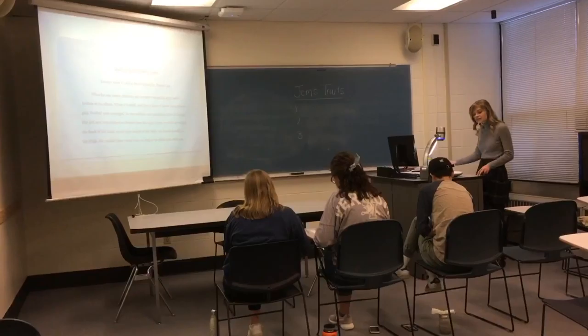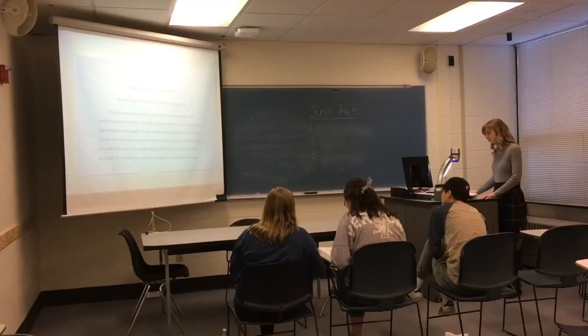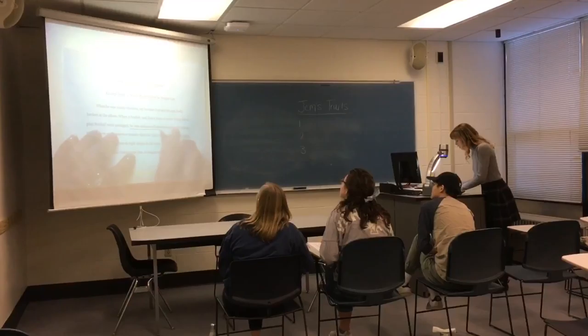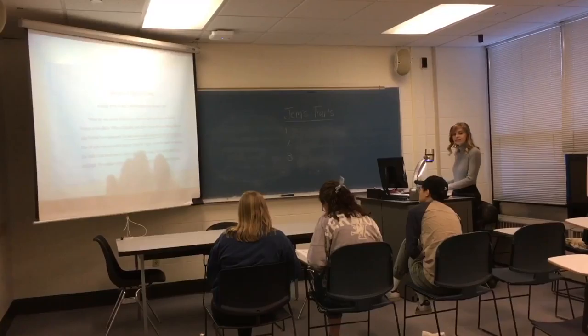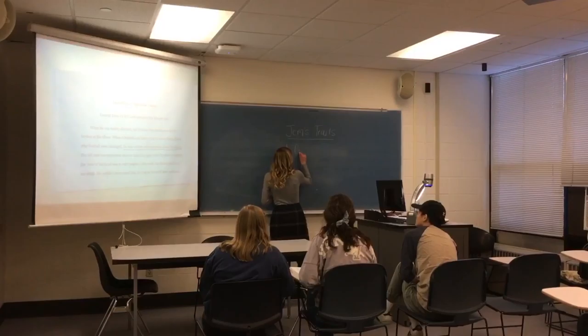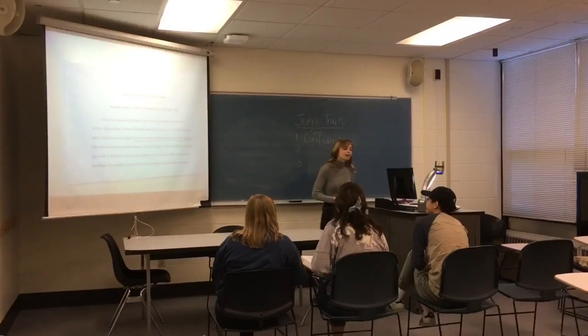Thank you. So looking at this passage and looking at the list of character traits we have, what can we identify about Jem? Carolyn? I think he's self-confident, because the passage says he was seldom self-conscious about his injury. Yeah, that's great. So even though his left arm was shorter than his right arm, he didn't care. He just walked how he had before he got hurt, and this shows that he's confident even though he had an injury.